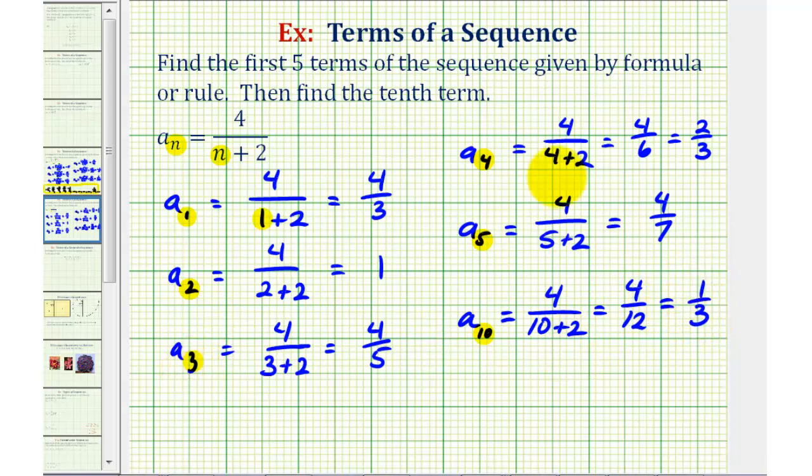Let's go ahead and give this as a list. So again, our first term is four-thirds. The second term is one. Third term is four-fifths. Fourth term is two-thirds.